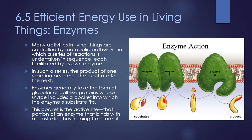Many activities in living things are controlled by metabolic pathways, in which a series of reactions is undertaken in sequence. The product of one reaction becomes the substrate for the next. For example, enzyme A combines two things into a product; enzyme B takes that product and transforms it further; enzyme C takes that and changes it into the final product. A metabolic pathway is when several different reactions need to occur in order to get the end product you need — you can't go instantly from start to finish, it has to go through several steps.